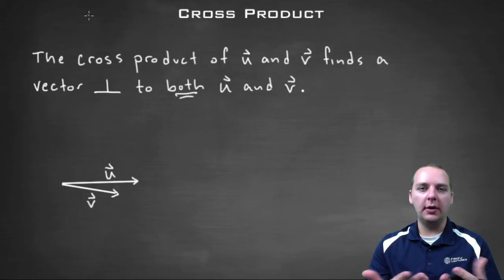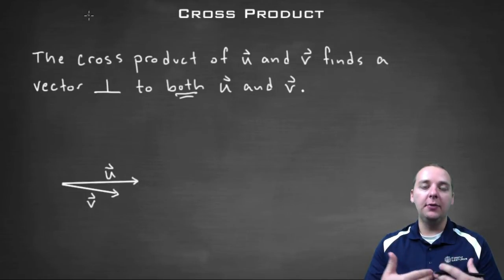Basically what the cross product does is if you have a vector u and you have a vector v and you take their cross product, it's going to give you a new vector.